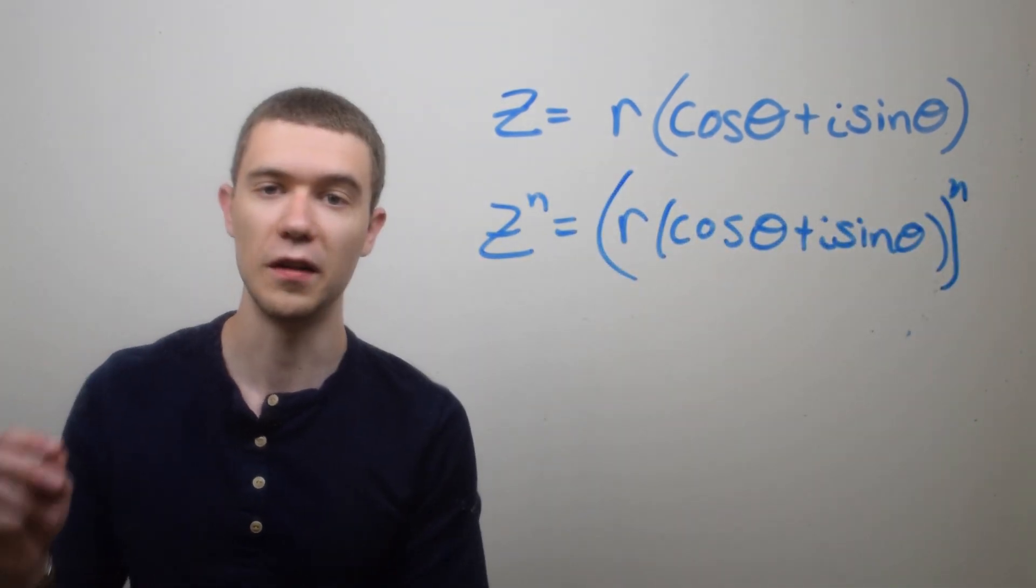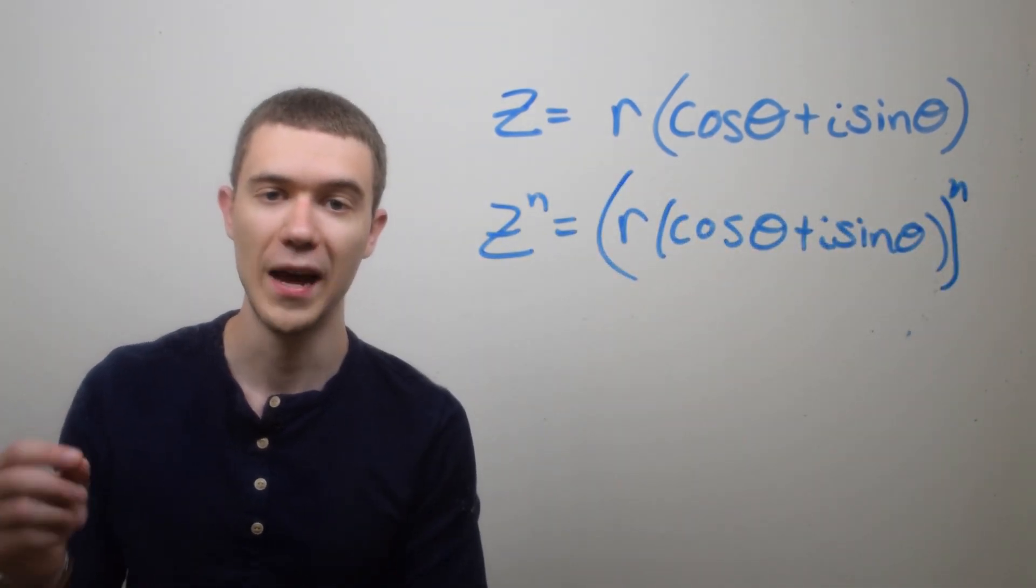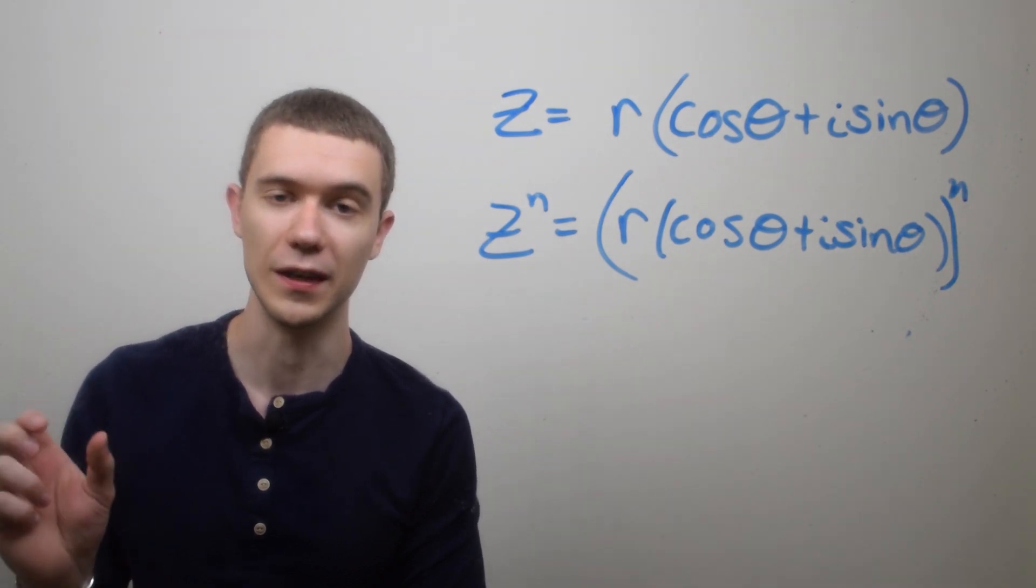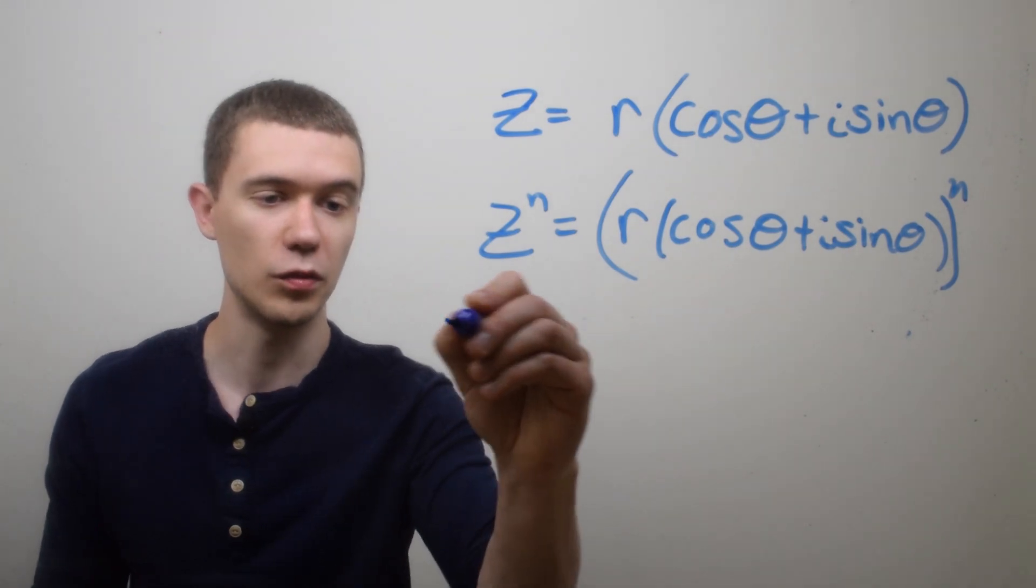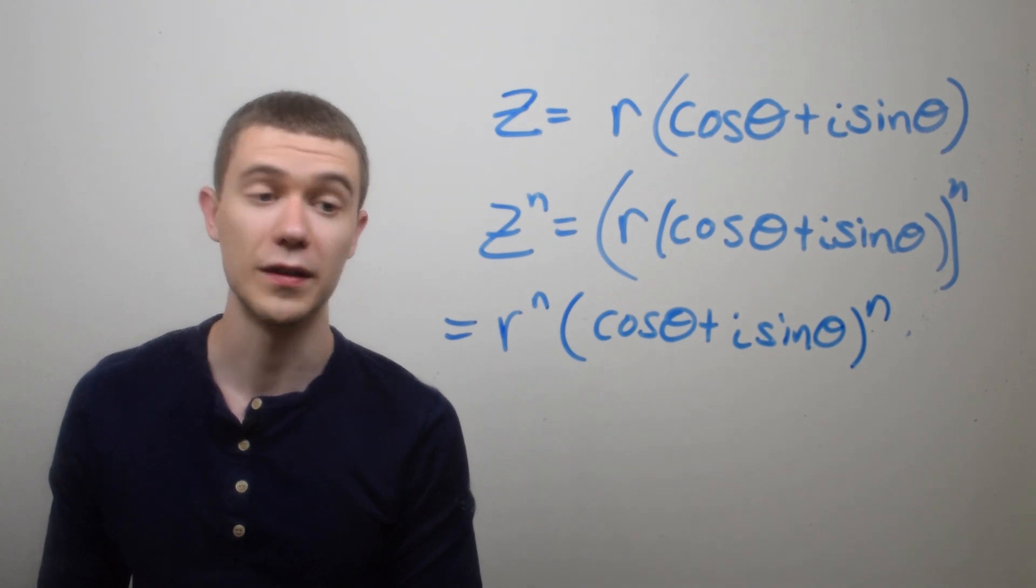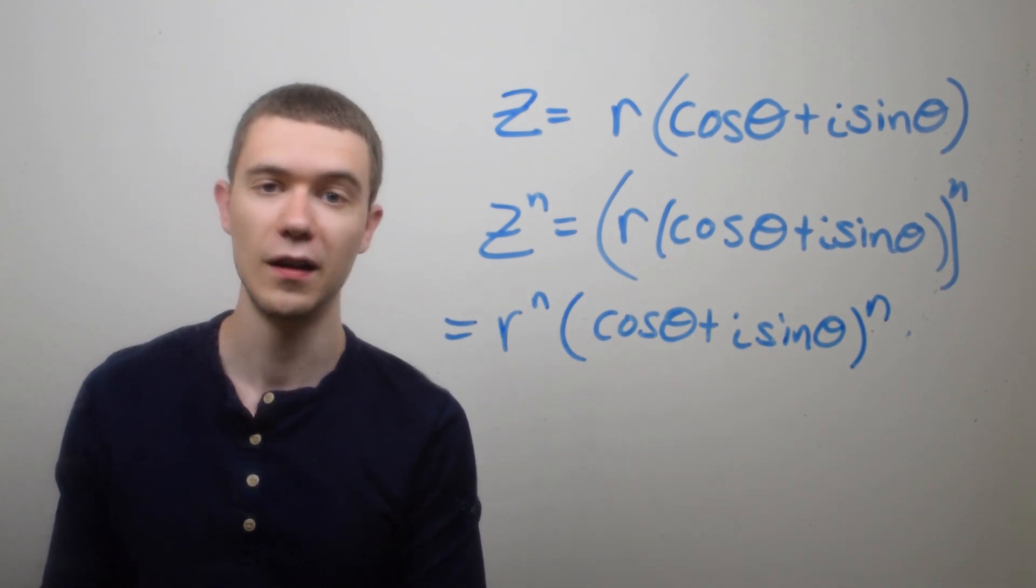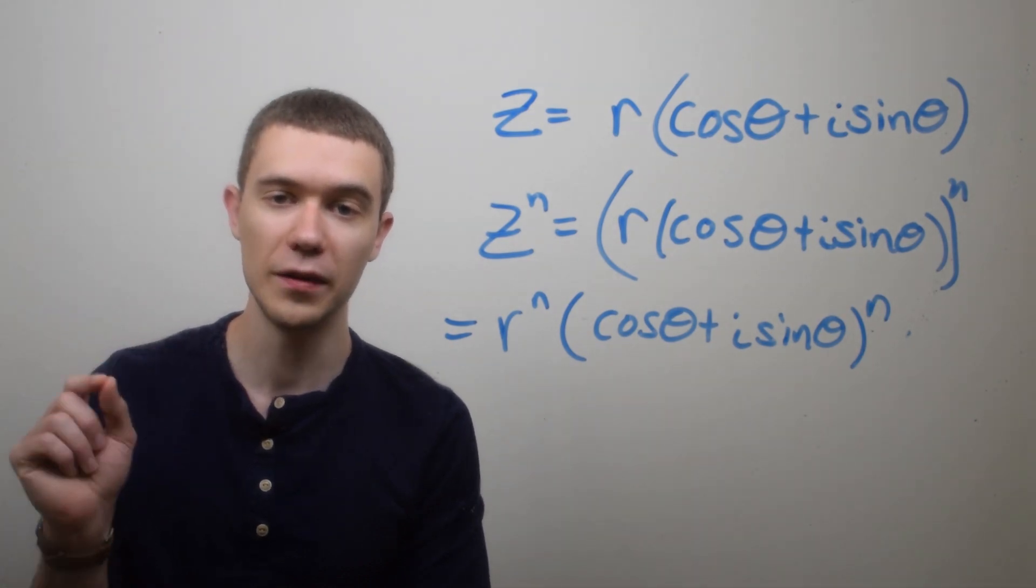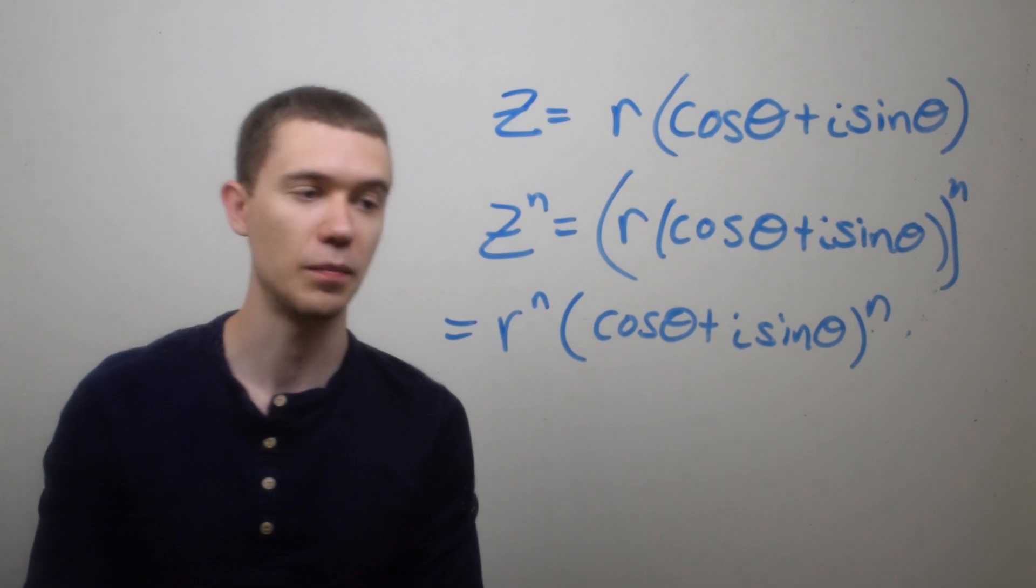So here I've just taken both sides to the nth power, and I can use properties of exponents to distribute this n to both of these things that are multiplied. So this will really be r^n times (cosine θ + i sine θ)^n. But now that we know the de Moivre formula, I can apply the de Moivre formula to just this part.